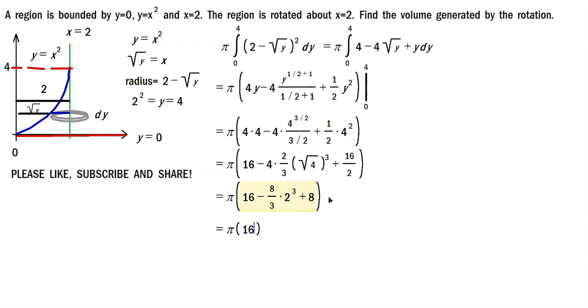Now this square root of 4 is 2, and so it becomes 2 cubed this way. Okay, plus 16 divided by 2, which is 8. And then you have pi, and then you have 16 minus 2 cubed is 8, 8 times 8 is 64 over 3, plus 8. And then you continue working on this, so pi, 16 plus 8 is going to give you 24 minus 64 over 3.